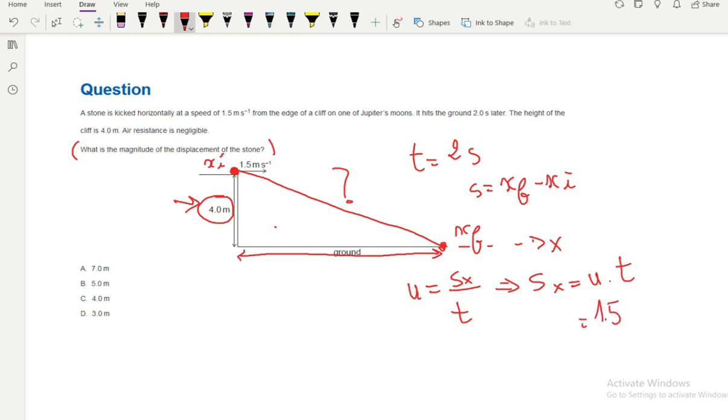So it's going to be 1.5 meters per second times 2 seconds, which is 3 meters. So now we have 4 meters height, and here displacement on the x-axis is 3 meters.